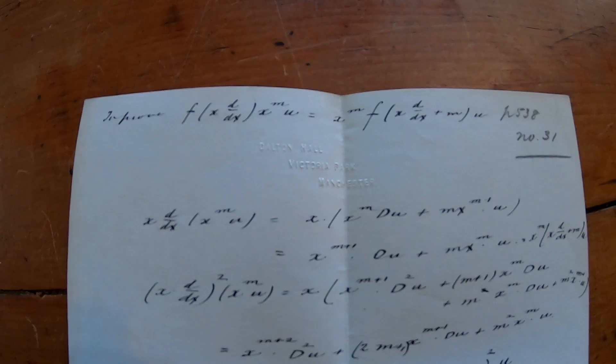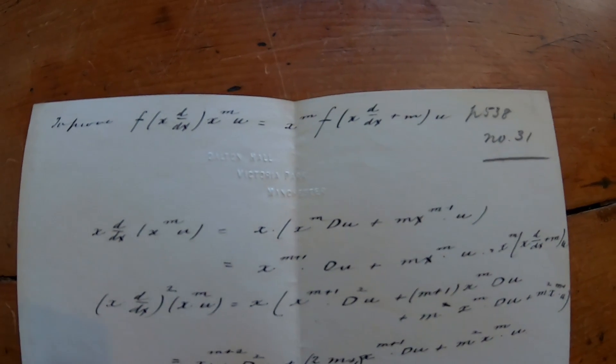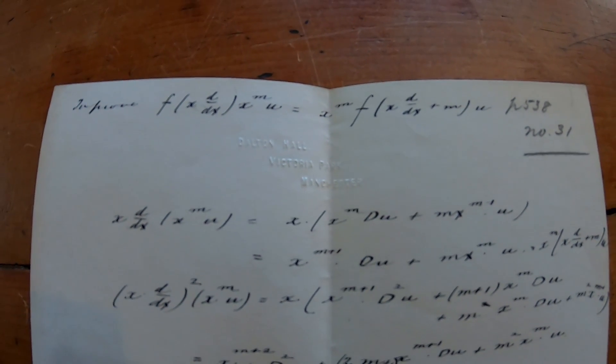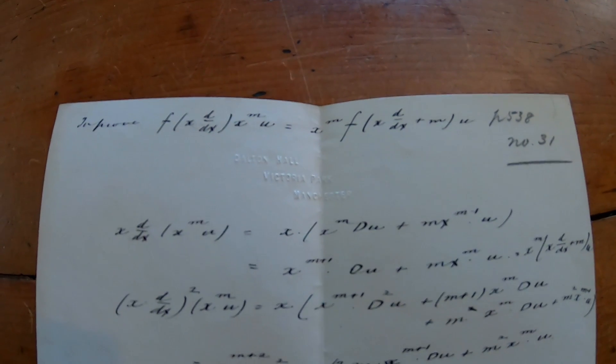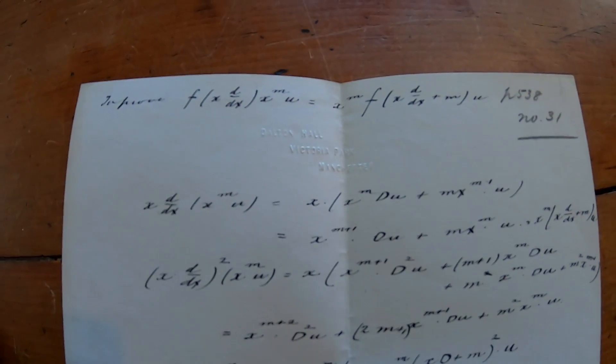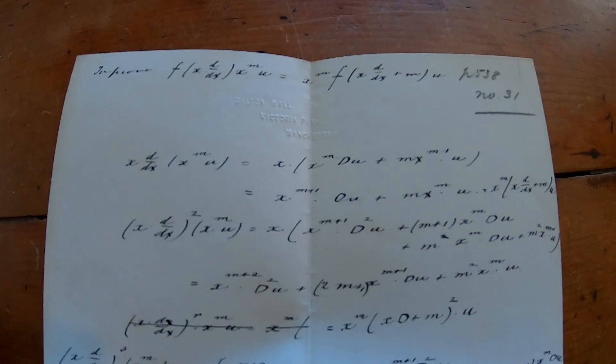So I found this inside the book and this paper is really thick. I wish you could feel it with me. There's a stamp there. It says Dalton Hall, Victoria Park, Manchester. It's special paper with a stamp on it and then whoever had this book was working through some type of calculus problem.